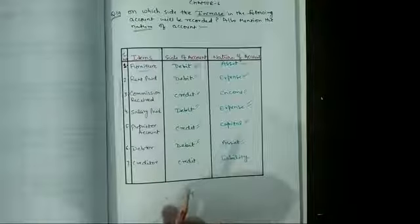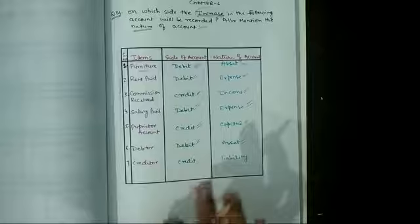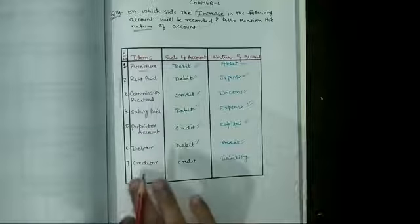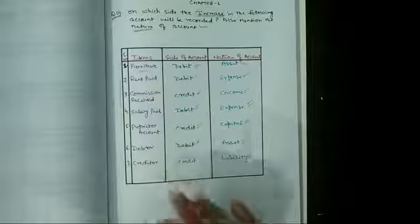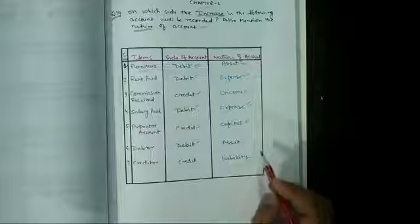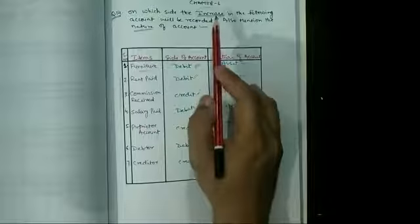The last one is creditors. Creditors, who are the creditors? Creditors वो लोग होते हैं जिनको business future में payment करता है. किस लिए? क्योंकि business इन लोगों से कुछ उधारी में purchase करता है, purchase on credit. तो creditors, it means creditors हमारी क्या होए? Liability. तो when liability increases, then it will be credit.